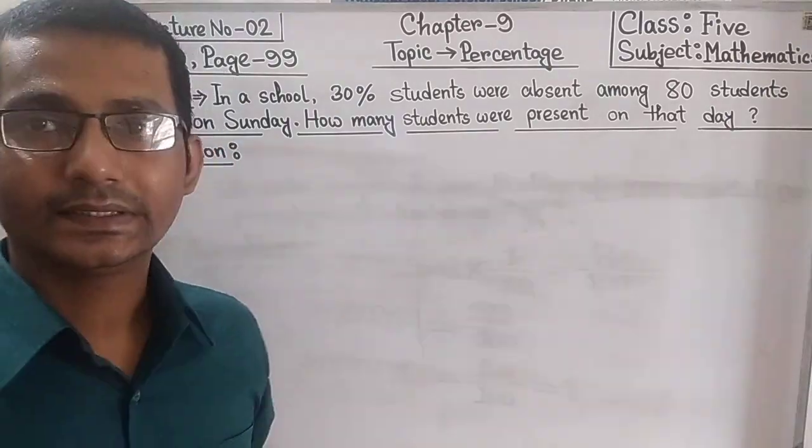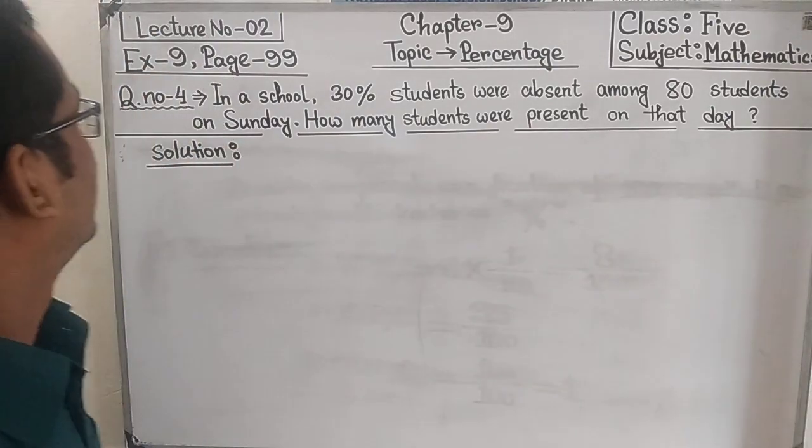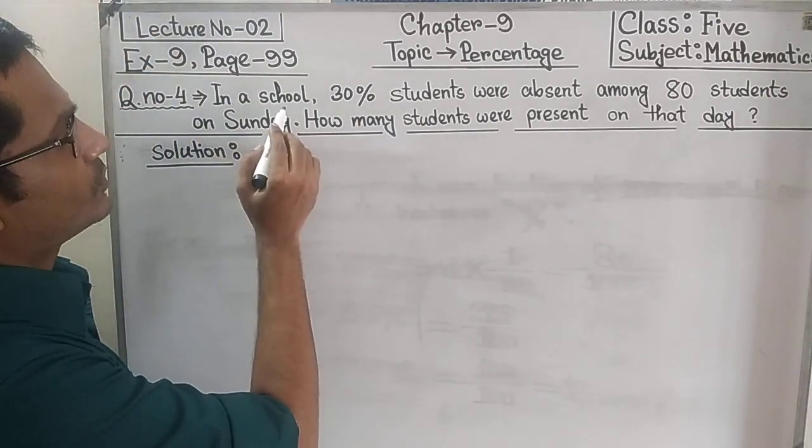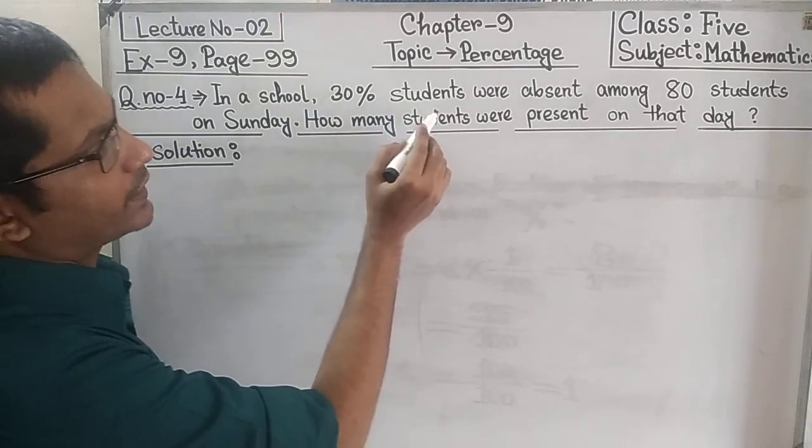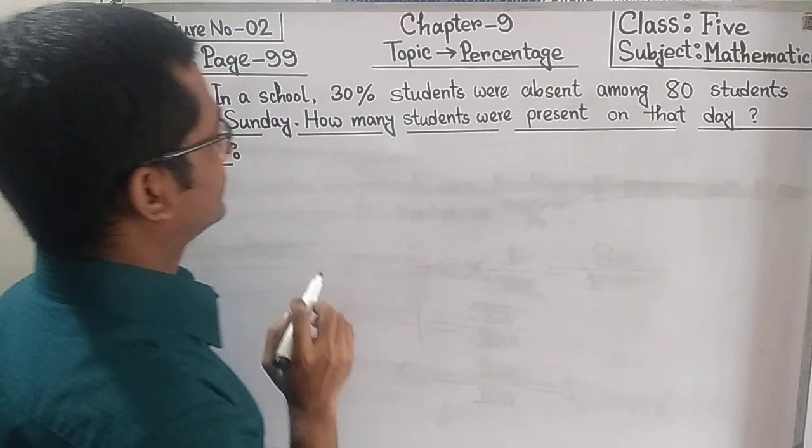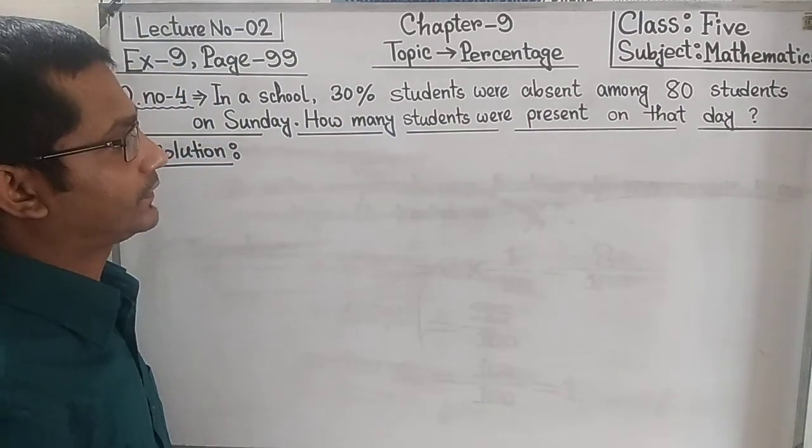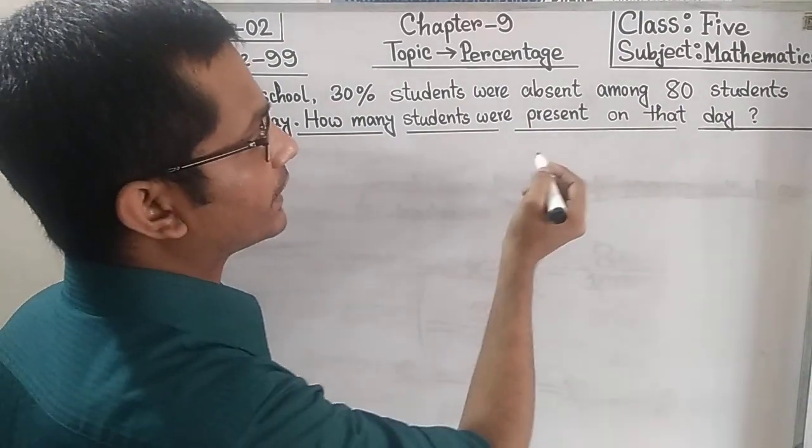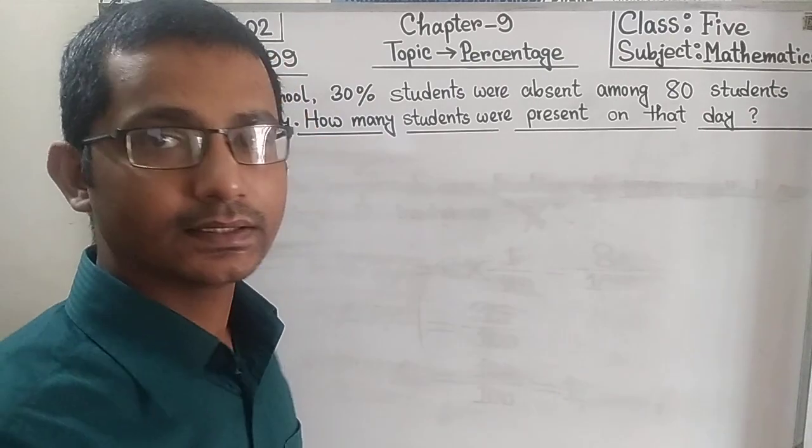So at first we have to read this question very carefully. In a school, 30 percent students were absent among 80 students on Sunday. How many students were present on that day?